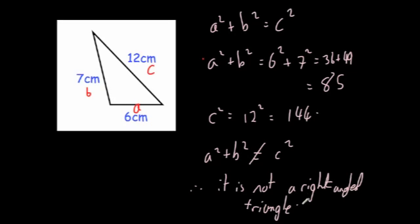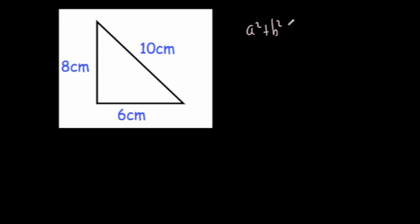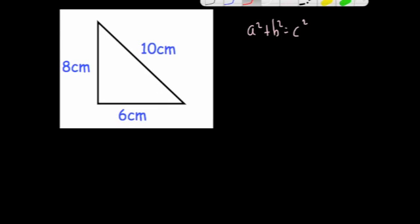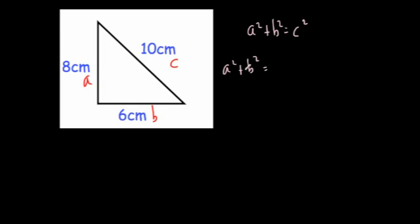Let's have a look at number one. Again, we assume a squared plus b squared equals c squared, and use that to show whether it's a right-angled triangle or not. Let's label the sides a, b, and c, where a and b are the two shorter sides and c is the longest side. So a squared plus b squared equals 8 squared plus 6 squared, which is 64 plus 36, equalling 100.